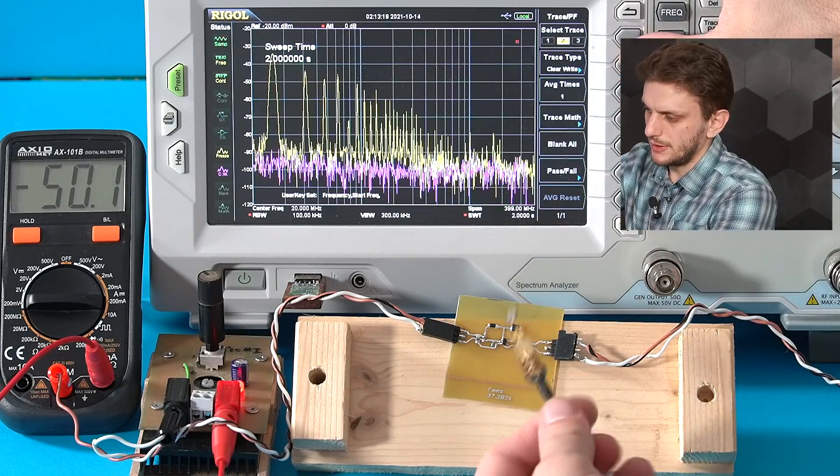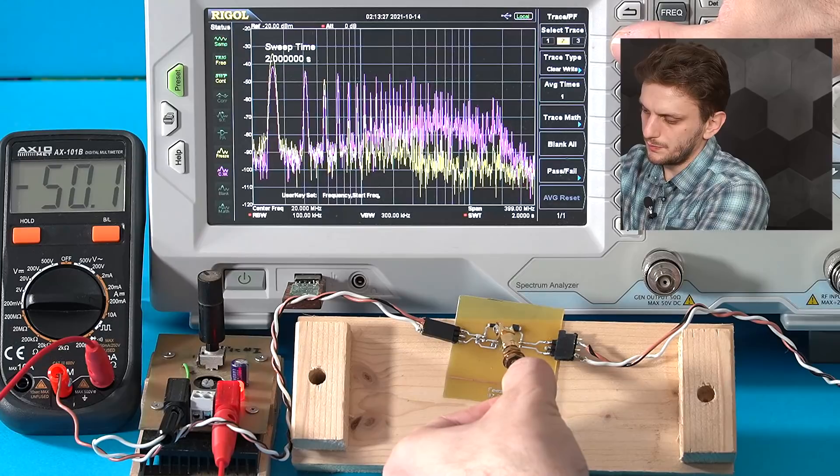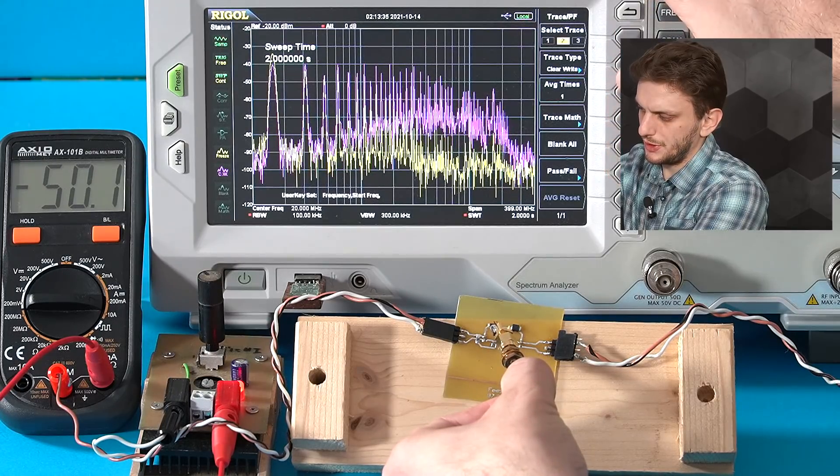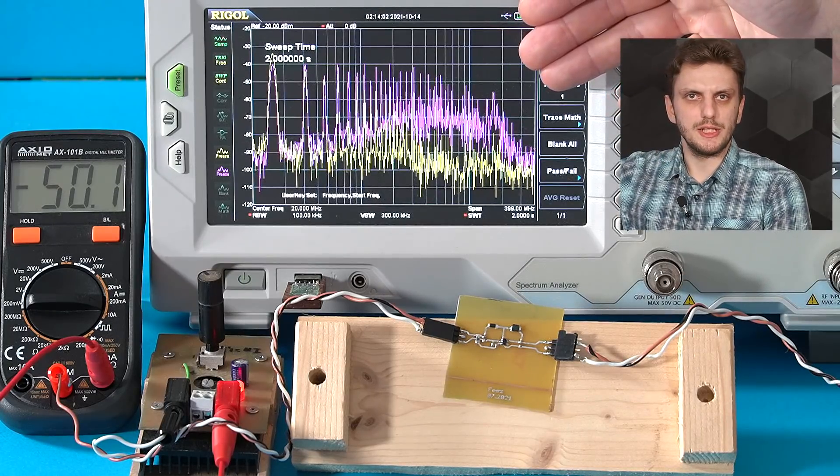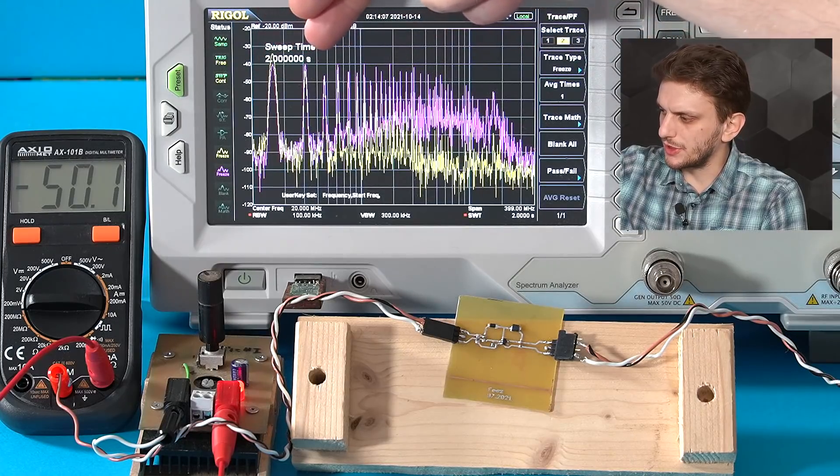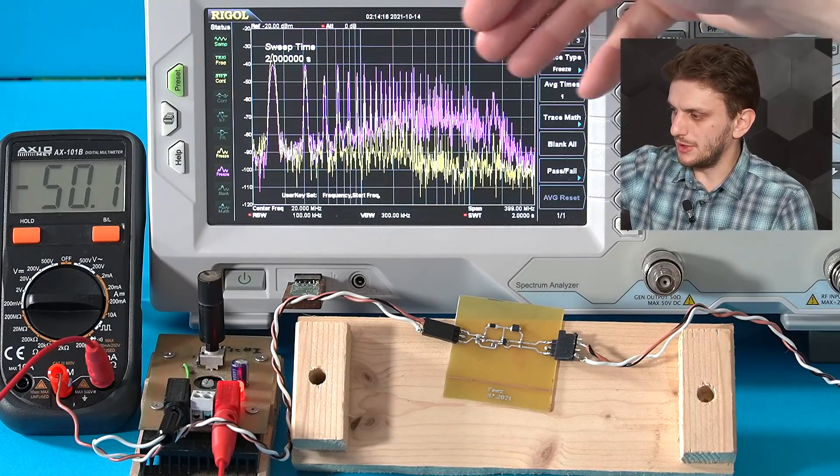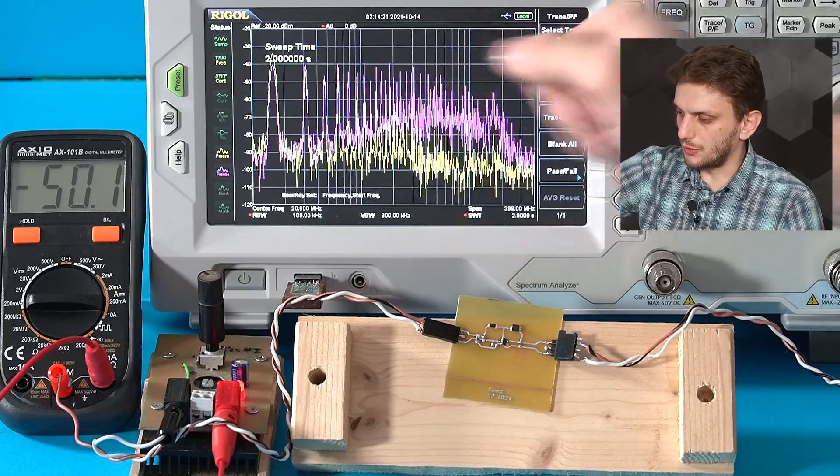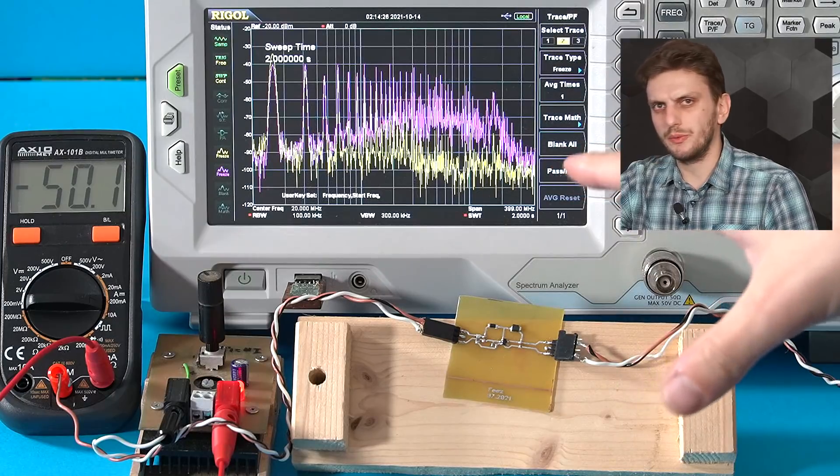But now if we take a second trace and we go with our probe over the other loop, so the output loop, we see a slightly different story. So let's just freeze this for a moment. So we don't just see noise, we see more noise than we saw previously. So at our fundamental frequency and let's say the first couple peaks, we see roughly similar values. But as we move to higher frequencies, we clearly see that the high frequency content is significantly larger with our probe on the output loop.